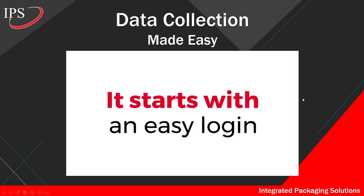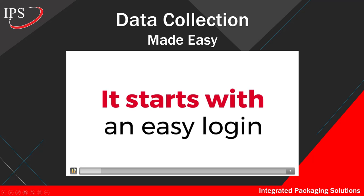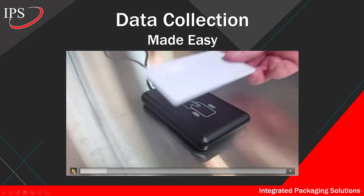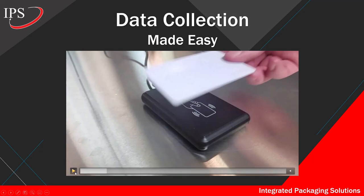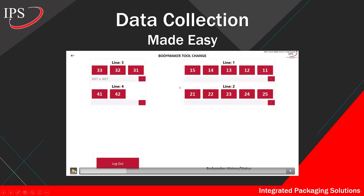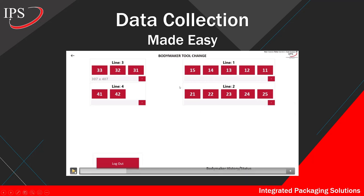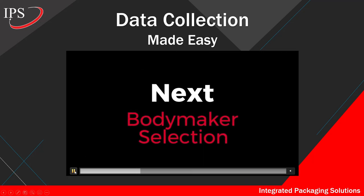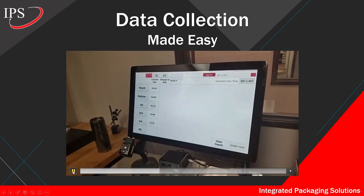It all starts with an easy login. We've integrated an RFID badge scanner into the software, using current employee badges. Based on the employee's role in the company, they'll be logged into Tool Control at their user level — for a body maker operator, that brings them directly to the tool change screen, where they can select the body maker using a touchscreen monitor.